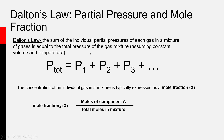Dalton's Law really states that the sum of the individual partial pressures of each gas in a mixture is equal to the total pressure of the gas mixture, assuming constant volume and temperature. Mathematically, the total pressure equals the partial pressure of the first gas plus the partial pressure of the second gas plus the partial pressure of the third gas, and so on, for however many component gases you have in that mixture.